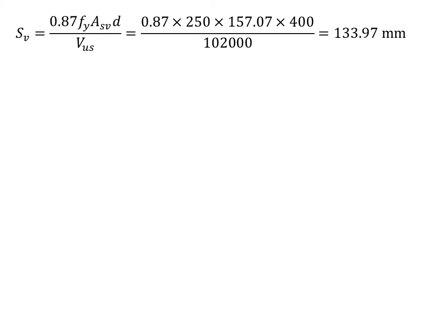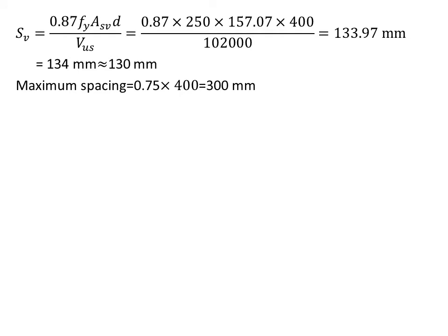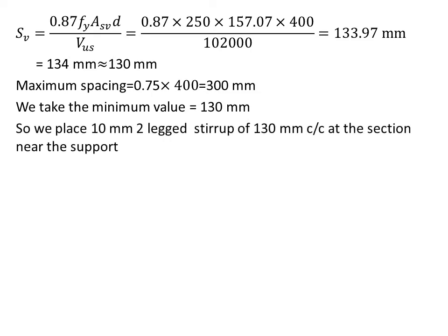Using the spacing formula SV = (0.87 × FY × ASV × D) / VUS, substituting values we get 133.97 mm, rounded down to 130 mm (to the nearest 10 mm). Checking maximum spacing: 0.75 × D = 0.75 × 400 = 300 mm. Since 130 mm is the minimum, we take that value. We provide 10 mm diameter two-leg stirrups at 130 mm spacing near the support.